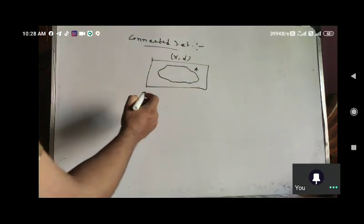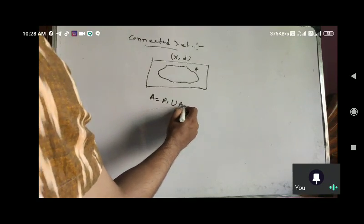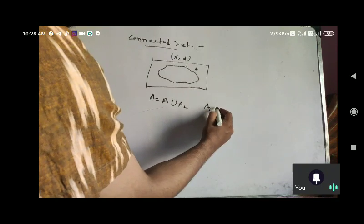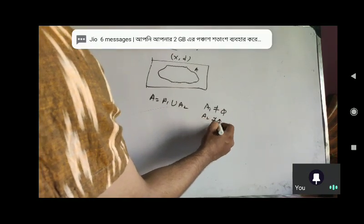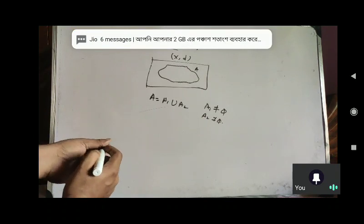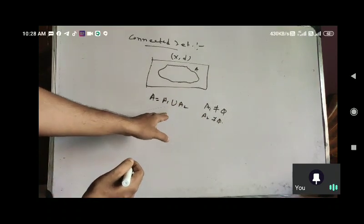This means that A1 is not equal to empty set, and A2 is also not equal to empty set. If the sets are non-empty, then they are separated.